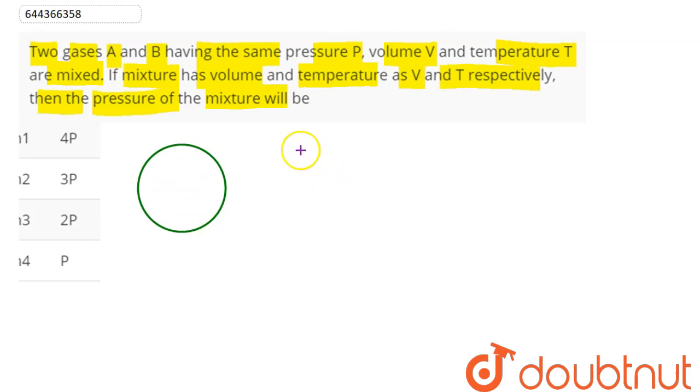Hence we can say here that there are two gases, gas A and gas B. They are mixed together to form a mixture. So we can say here this is gas A, this is gas B, and this is the mixture A plus B.